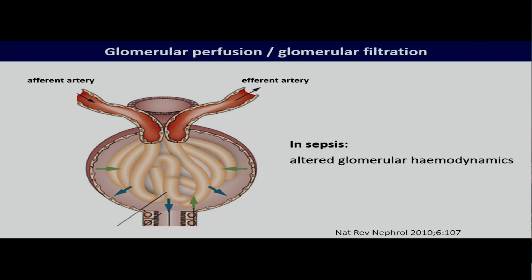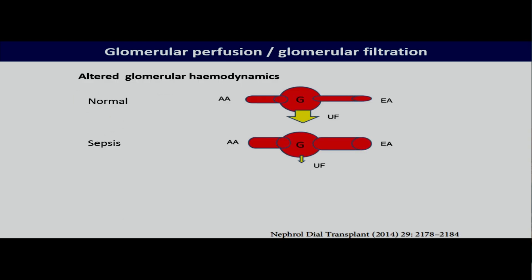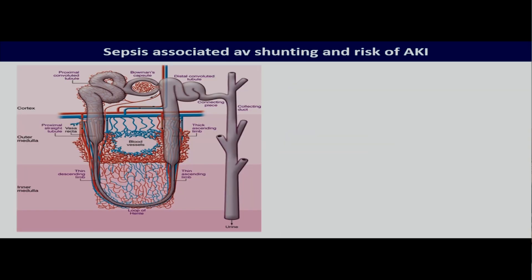At the same time, we also know that glomerular function can be affected directly as a result of changes in vascular tone. Normally, glomerular filtration depends on the close relationship between the afferent and the efferent artery. But this relationship and the hemodynamics are altered in sepsis, and they may be so altered that pre-existing shunts open up to the point that the glomeruli may be completely bypassed.